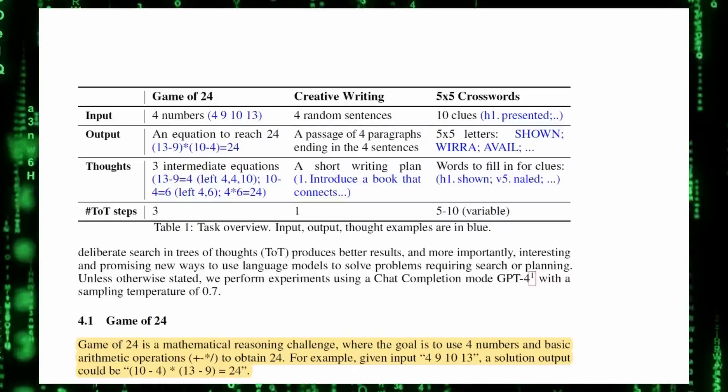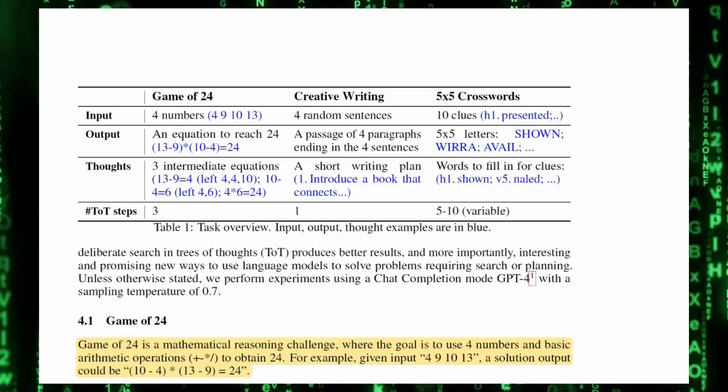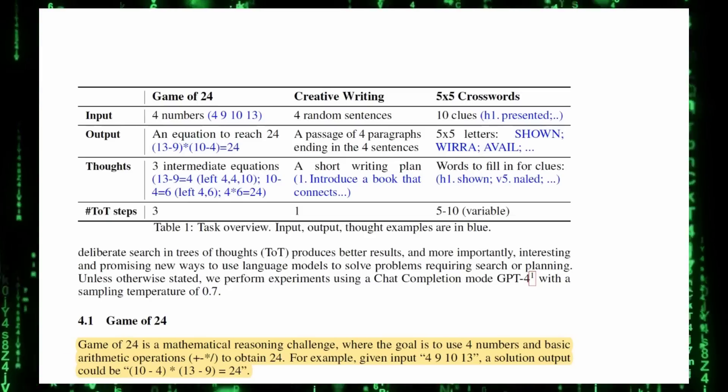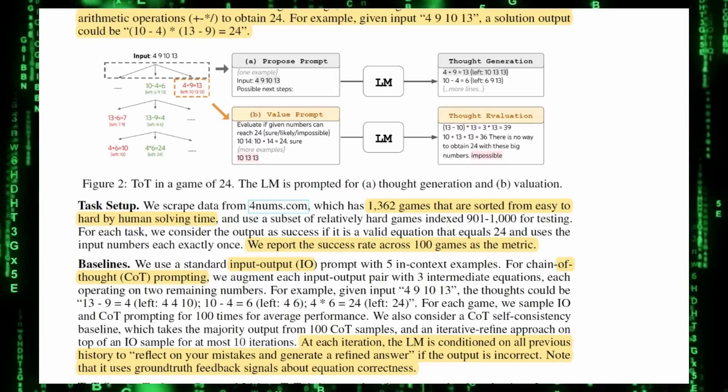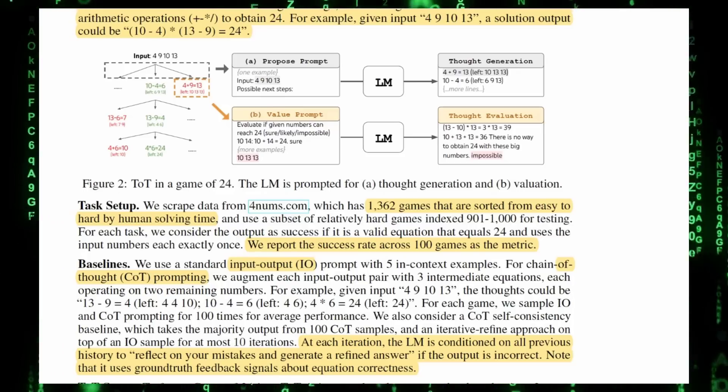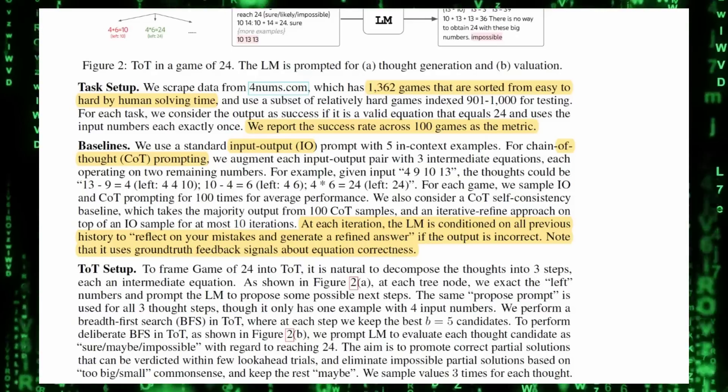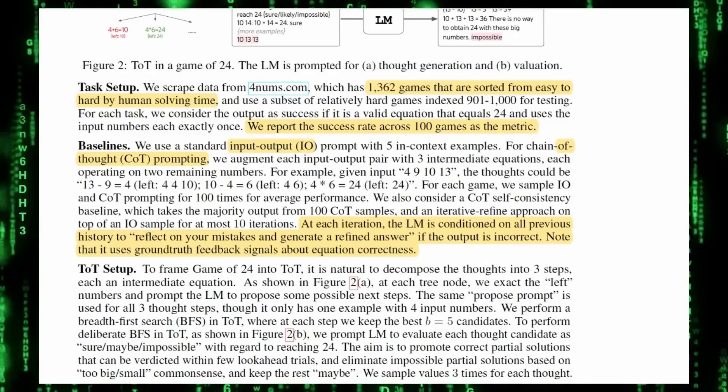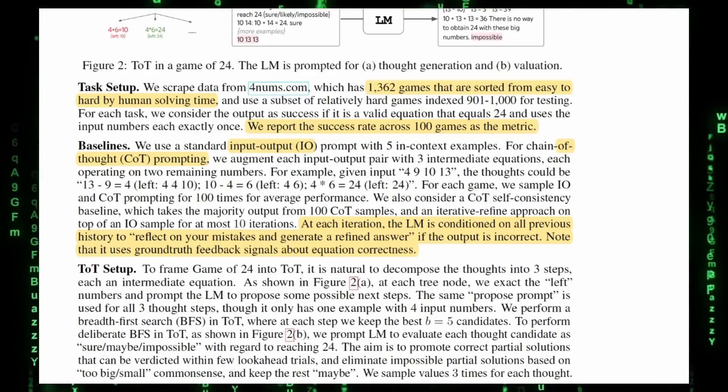The first thing they did was they made it play a game called 24, Game of 24. It's somewhat similar to Sudoku. Game of 24 is a mathematical reasoning challenge where the goal is to use four numbers and basic arithmetic operations to obtain 24. How they set it up is they took over 1,300 games and they sorted it from easy to hard by human solving time. They started with the standard input-output I.O. and they prompted it with five in-context examples. They also did the chain of thought prompting, and through each iteration, the language models conditioned on all the previous history to reflect on your mistakes and generate a refined answer if the output isn't correct.